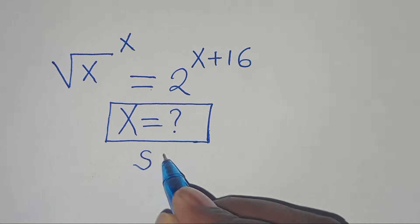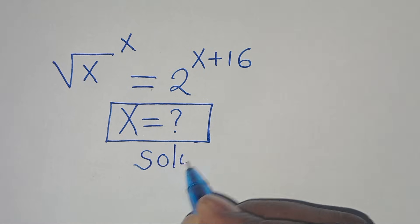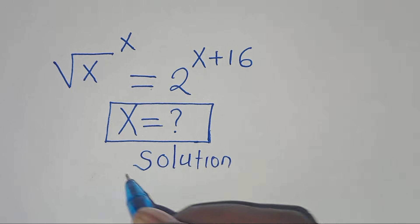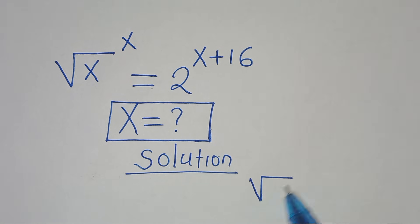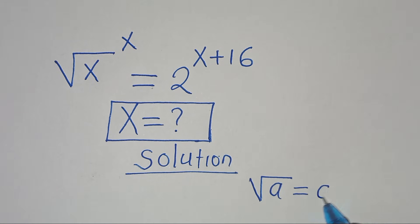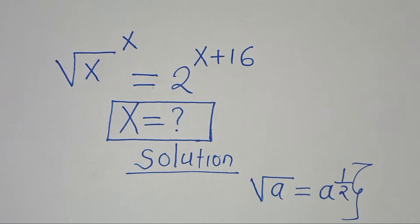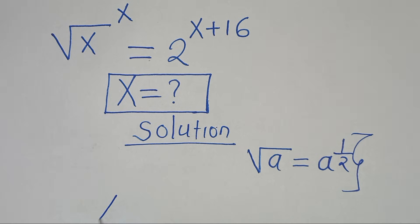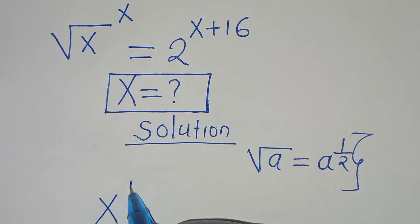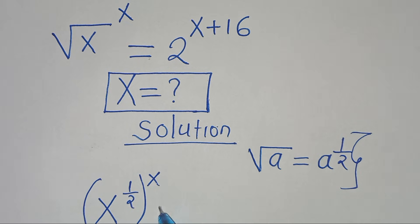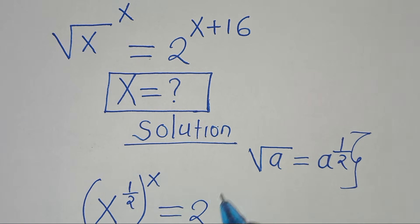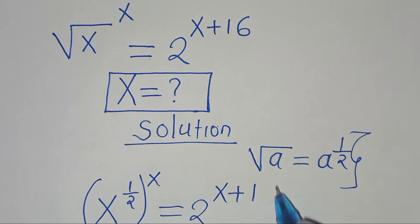Now let's provide a solution. We have that the square root of x is in the form of square root of a, which we can express as a to the power of half. Applying this property, we have x to the power of half raised to the power of x, this is equal to 2 to the power of x plus 16.